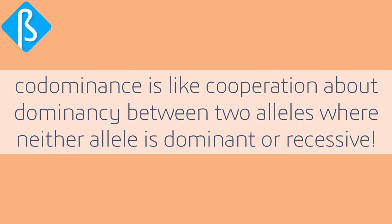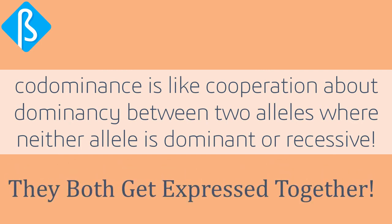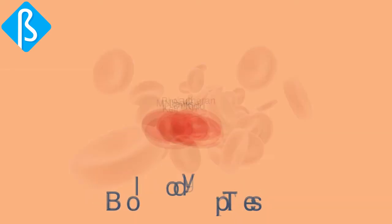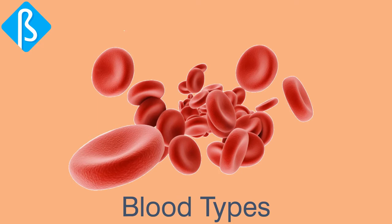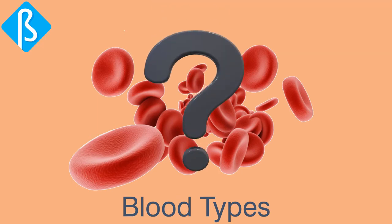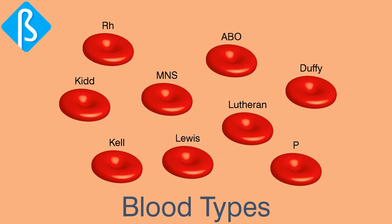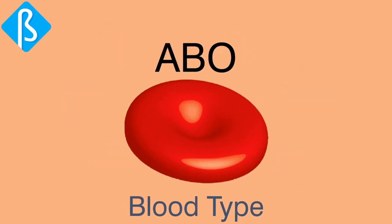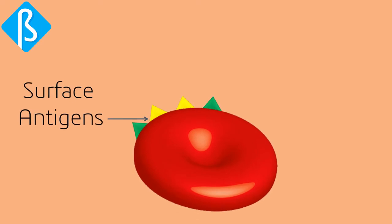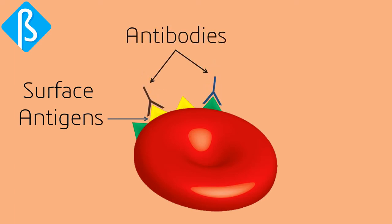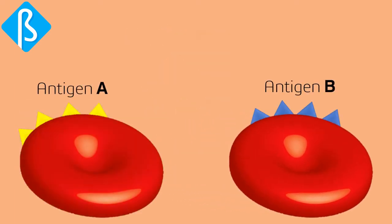As the name suggests, co-dominance is like cooperation in dominance between two alleles, where neither allele is dominant or recessive — rather, both are expressed together. To understand co-dominance, let's examine human blood types. The plasma membrane of red blood cells has groups of interconnected oligosaccharides that act as surface antigens — molecular structures recognized by antibodies produced by the immune system. On RBCs, two different antigens are found: antigen A and antigen B, synthesized by alleles Iᴬ and Iᴮ.